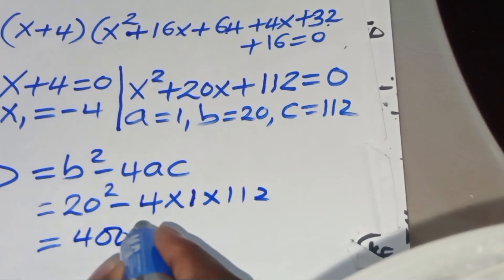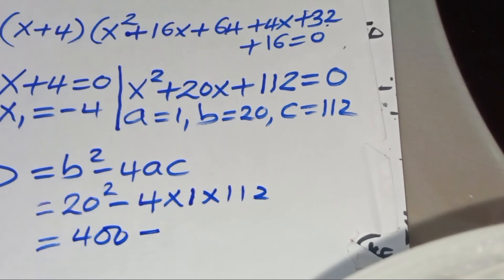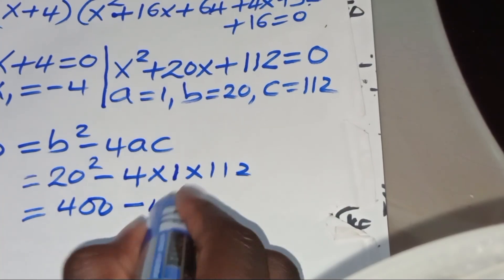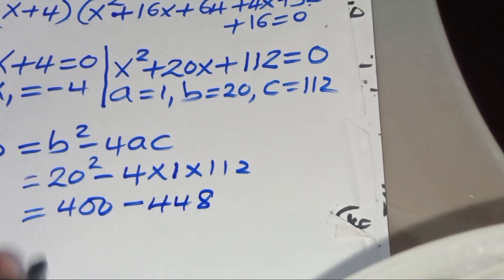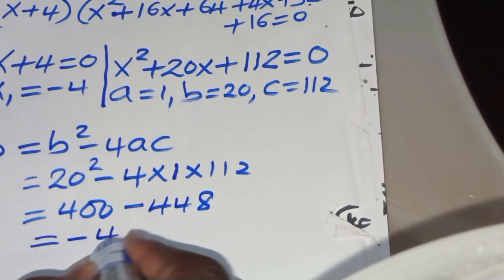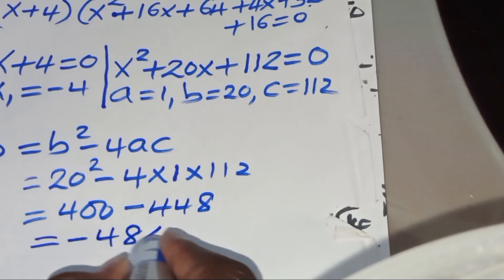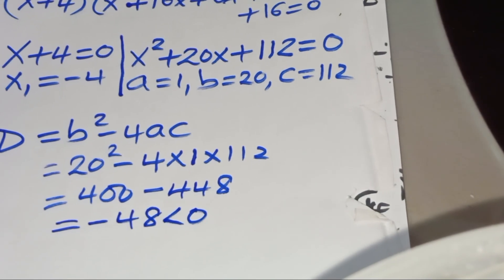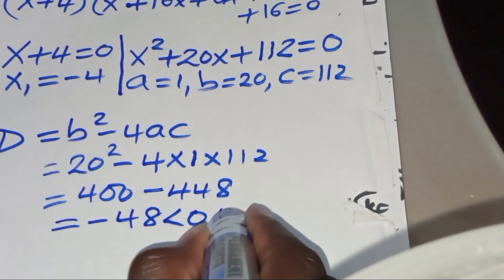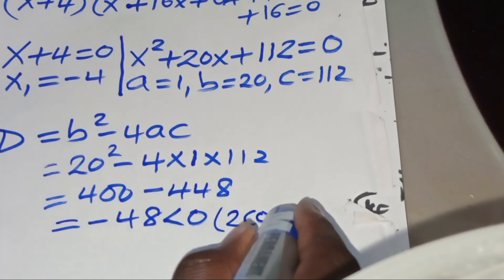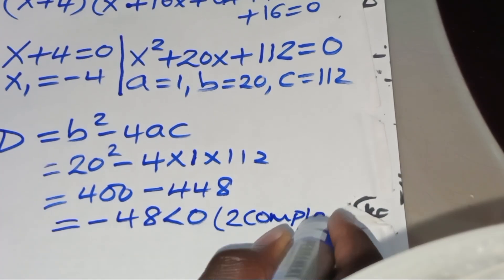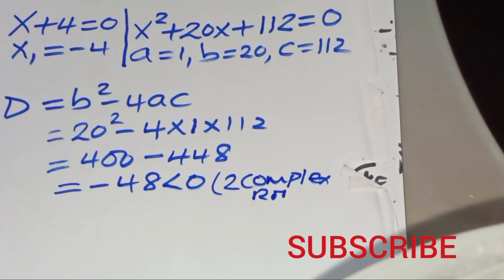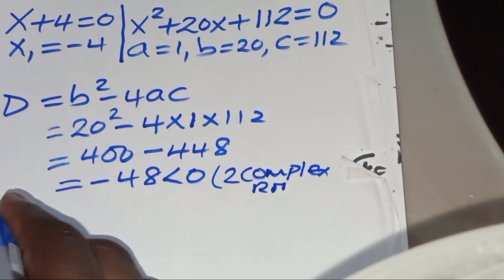This gives 400 − 448 = −48, which is less than 0. This indicates we have two complex roots.